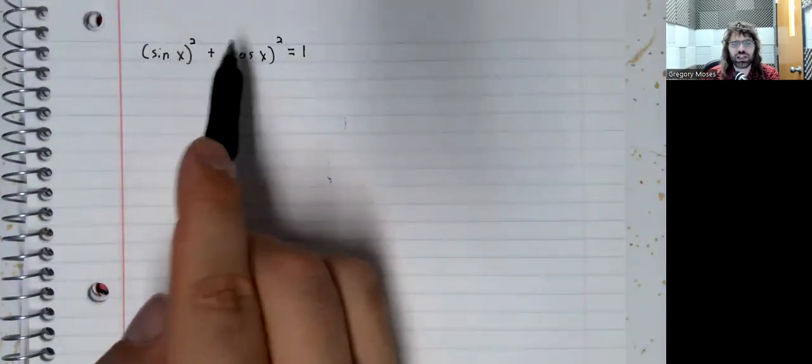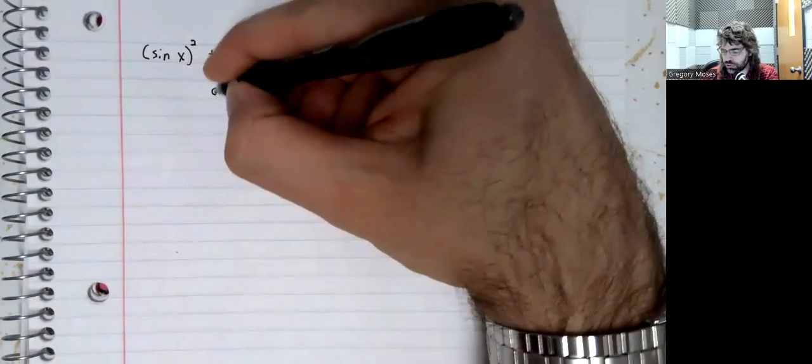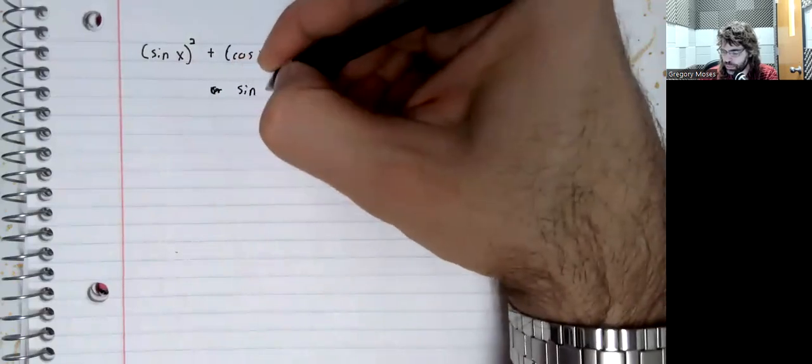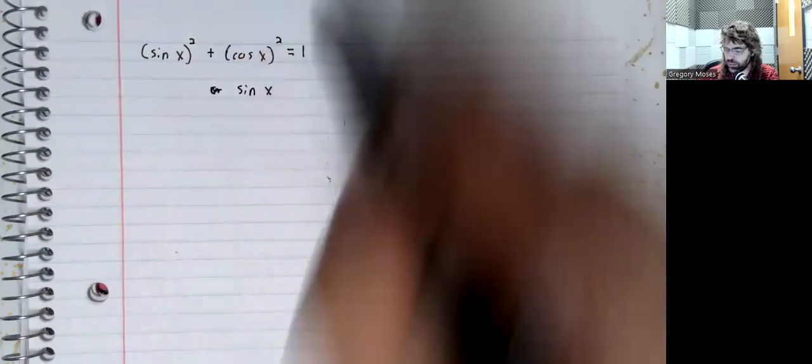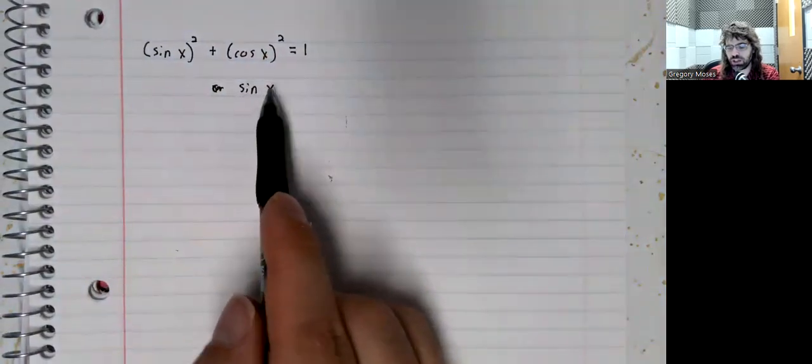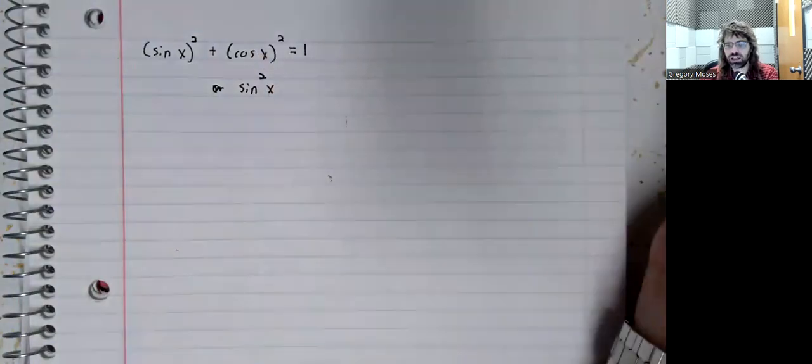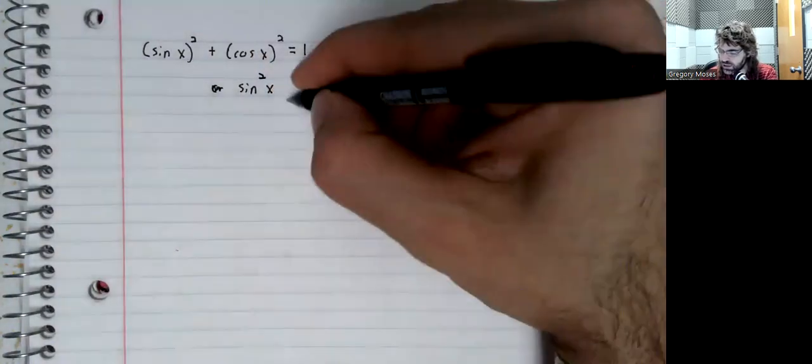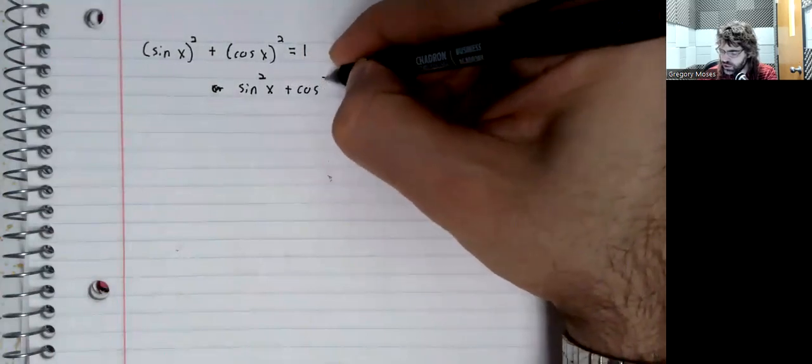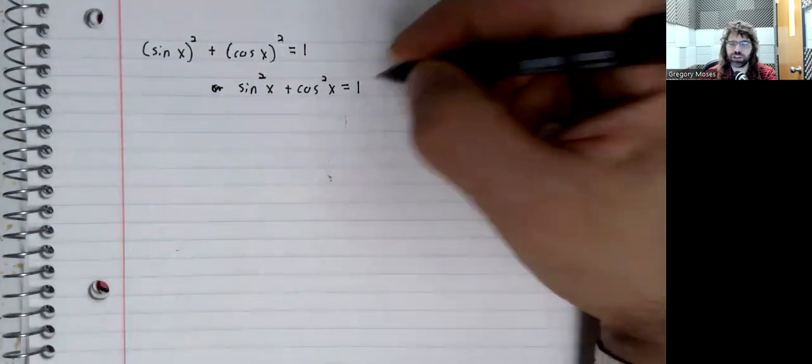Powers of the sine and cosine are traditionally written a little differently, with the power going in between the name of the trig function and the value x. So the sine squared of x plus the cosine squared of x equals one.